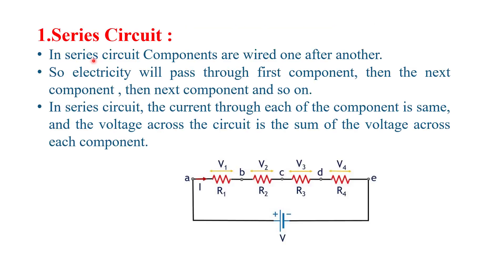In a series circuit, components are wired one after another. Here we see in the diagram four resistors R1, R2, R3, and R4 connected in series. In a series circuit, electricity passes through the first component, then the next, then the next, and so on. The current through each component in a series circuit is the same.